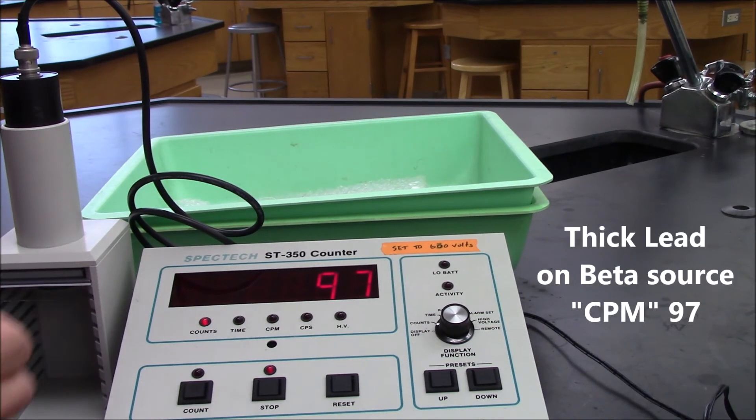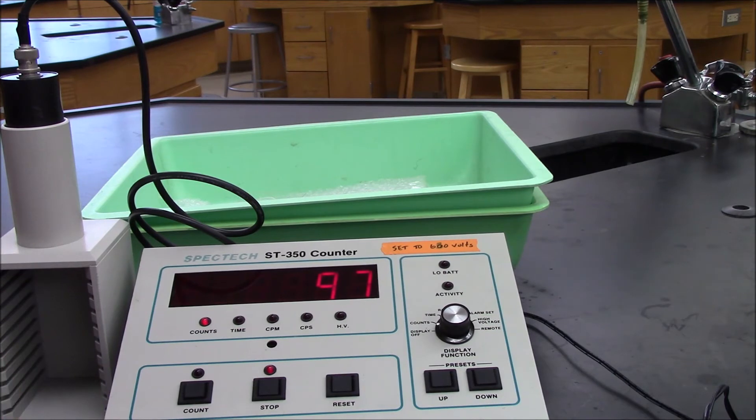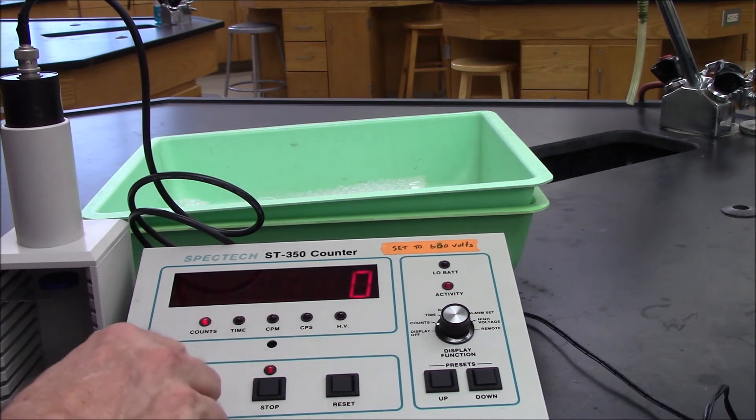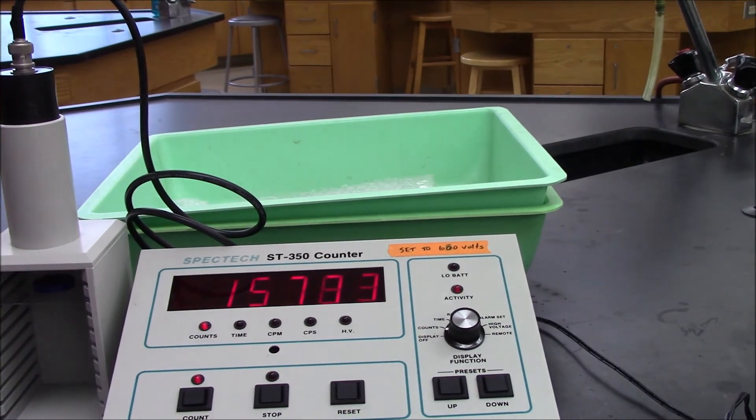Now we'll move on to the gamma sample. So the gamma sample actually gives off both beta and gamma, but it's only the gamma we're going to detect here. So we're coming up to the end of the gamma sample alone, and you can see we've got 17,000 counts per minute.